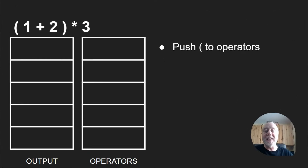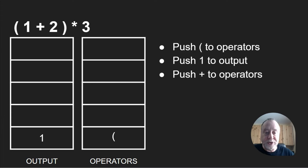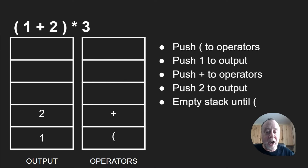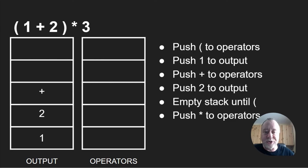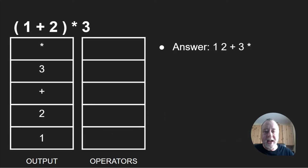The tricky case is when you have parentheses — brackets as I often call them. First, push the opening bracket onto the operator stack. Push the one onto the output stack, push the plus onto the operator stack, push the two onto the output stack. Now we hit a closing bracket: empty the stack down to and including the opening bracket, but discard the opening bracket — there are no brackets in a postfix expression. That puts the plus onto the output stack. Then put the multiply and three on, pop the multiply, and you have: one two plus three multiply.